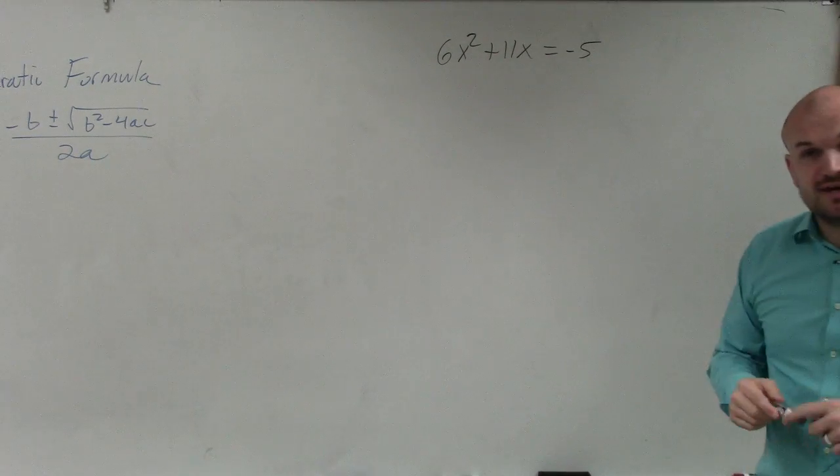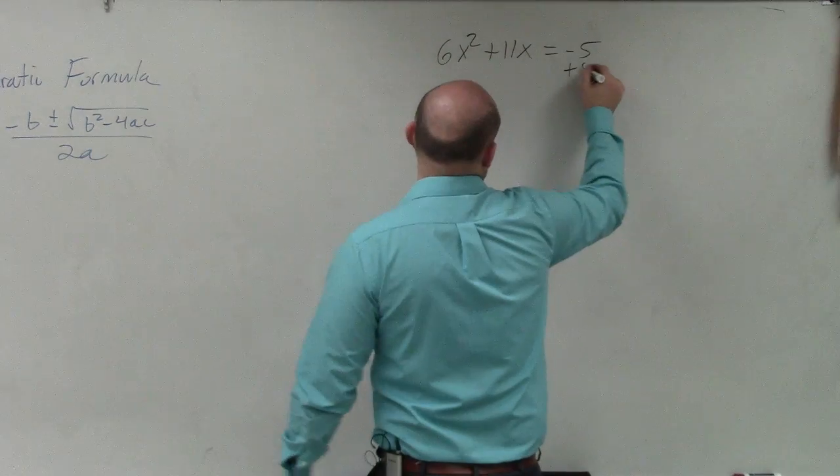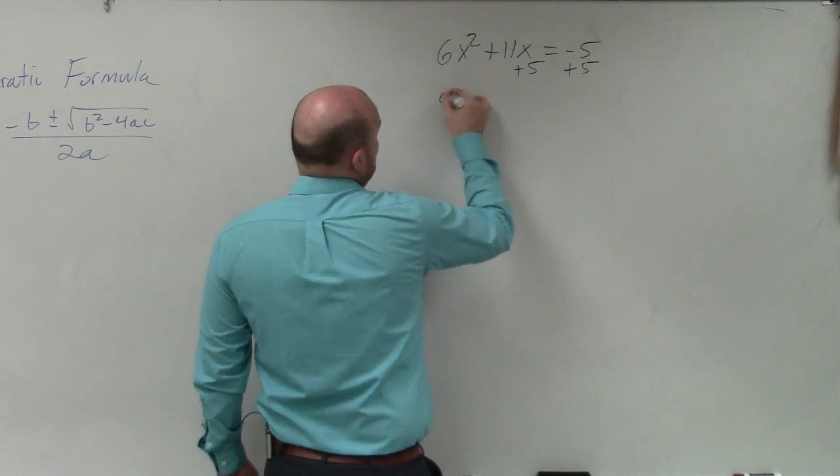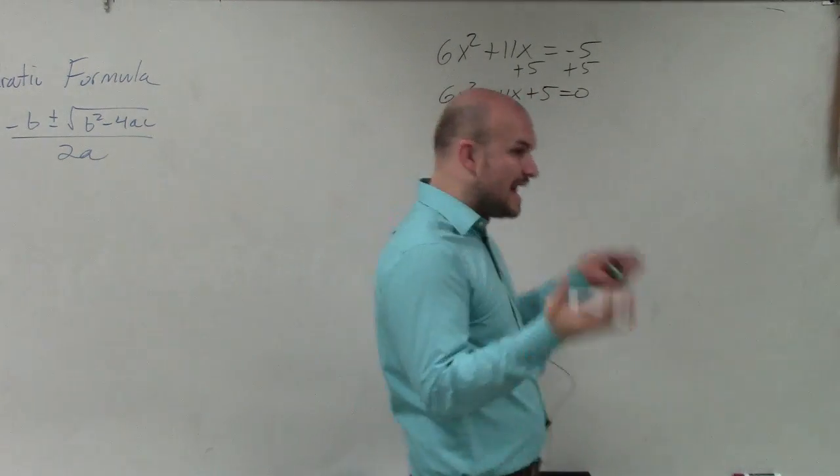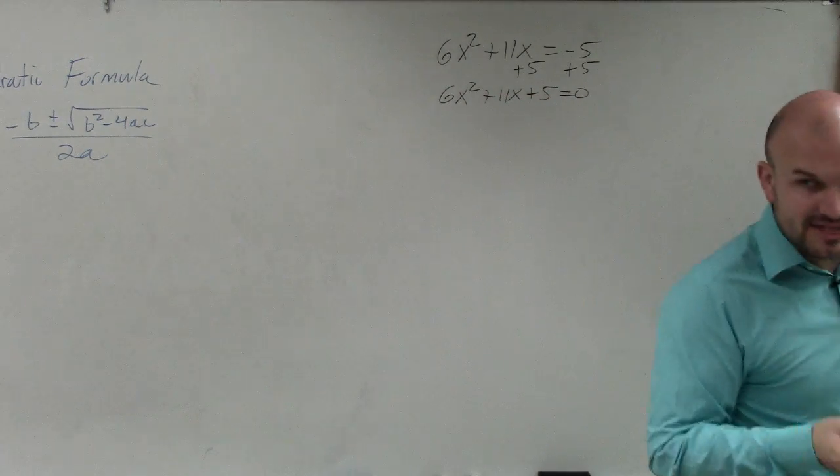So in this case, I don't have an equation set equal to 0, but what I can do is add 5 to both sides. Therefore, I have 6x squared plus 11x plus 5 equals 0. Now I have an equation that is set equal to 0.